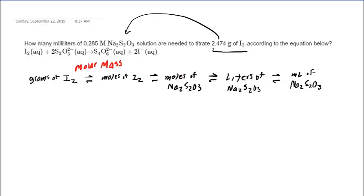And then from moles of iodine to moles of this Na2S2O3, we'll be using the coefficients from the balanced reaction. After we have the moles of our target substance, we'll convert it into the liters simply by using the molarity. And then once we have the liters, we can get it into milliliters by just using a standard unit conversion.